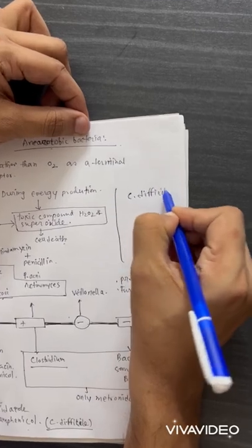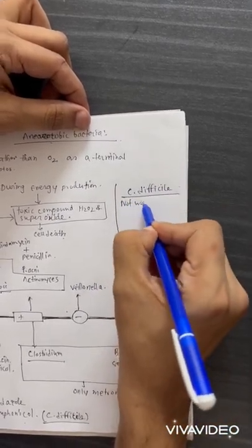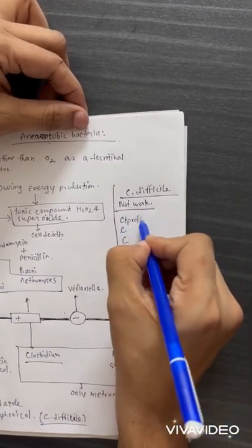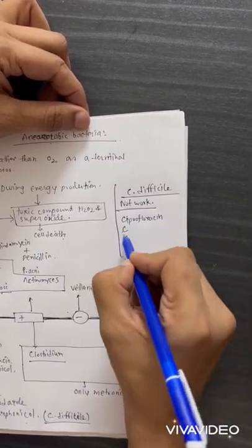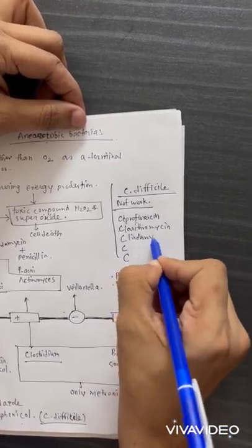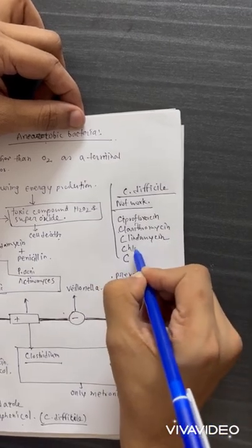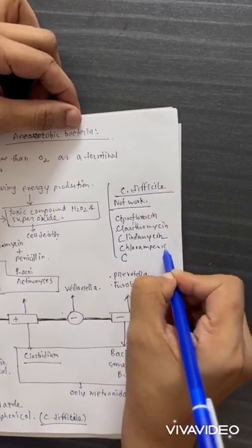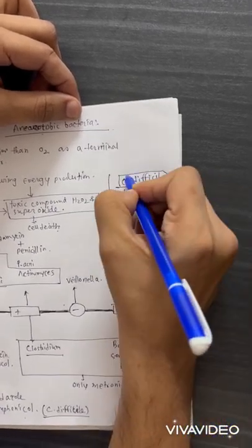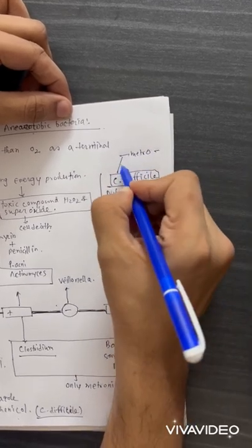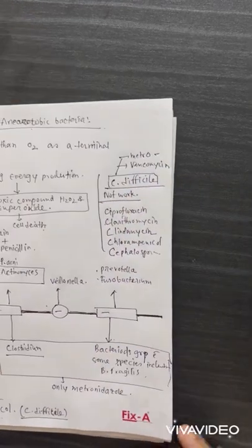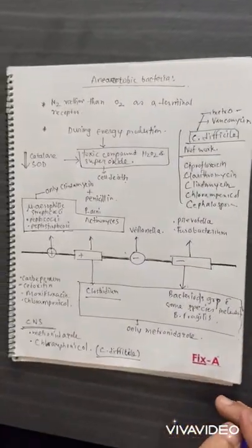The antibiotics that do not work against Clostridium difficile all start with the letter C: ciprofloxacin, clarithromycin, clindamycin, chloramphenicol, and cephalosporins. The drugs that work against Clostridium difficile are metronidazole, and if metronidazole resistance occurs, vancomycin is used. That was all about anaerobic bacteria — thanks for watching.